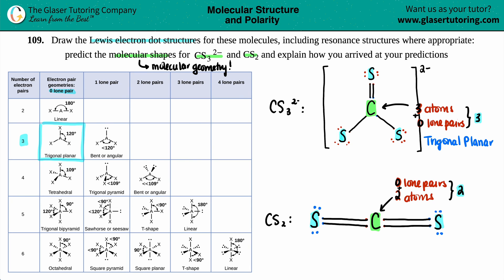So if you want to explain how you arrived at your predictions, it's basically just talking about how many atoms and how many lone pairs around the center.